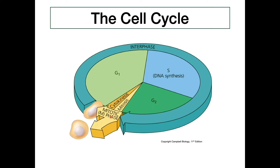During G2, the cell continues to grow and finishes preparation before entering the M phase. On this diagram the M phase is labeled as mitosis, but this can also be meiosis — it's the same process for both types of cell division. The M phase is where mitosis and then cytokinesis take place. The entire outer ring represents interphase, which includes G1, S, and G2 — the time between division events. Once we move out of interphase, we enter the M phase and division takes place.